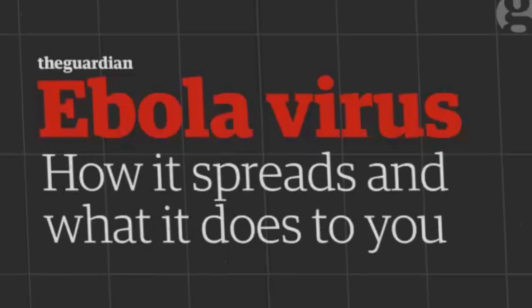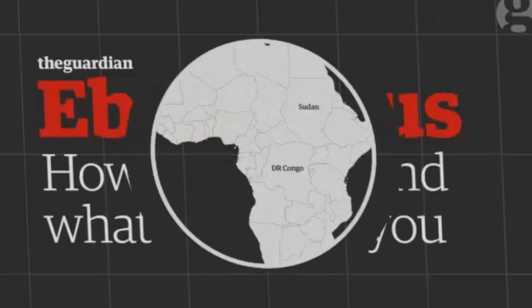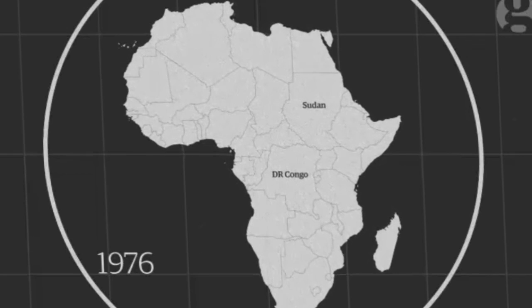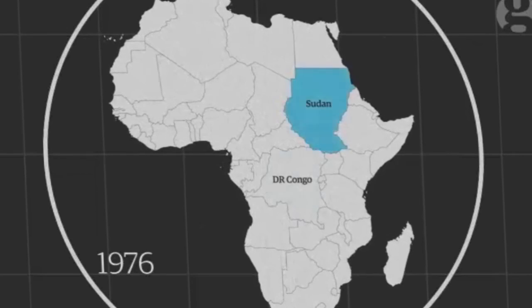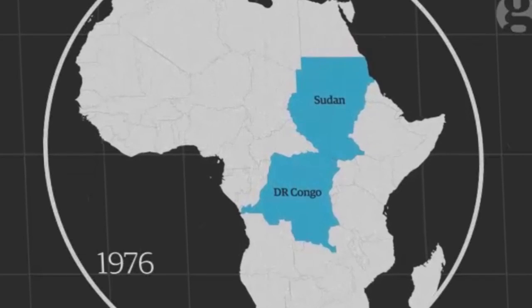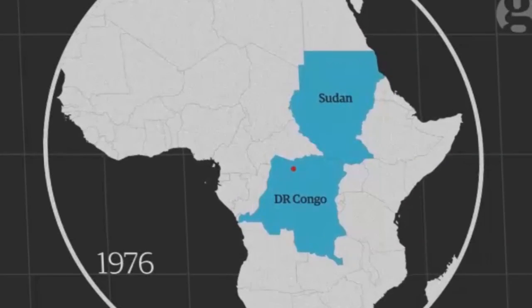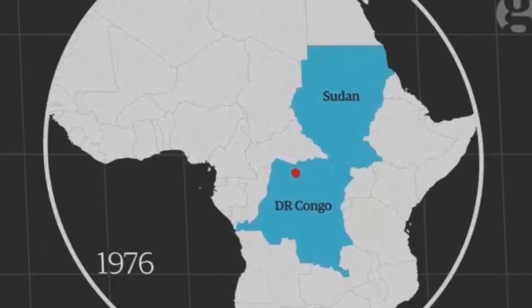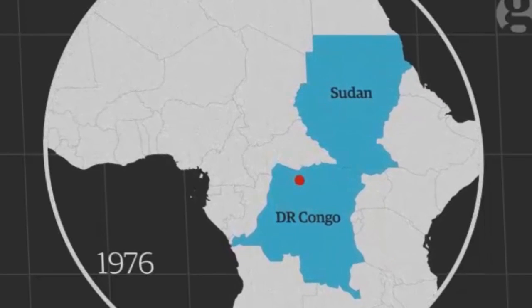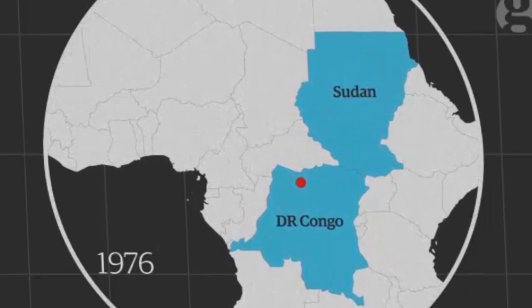The Ebola virus was first recognized in 1976 after two near-simultaneous outbreaks in Sudan and the former Zaire. The bug was named after a small river in the northwest of what is now the Democratic Republic of Congo.